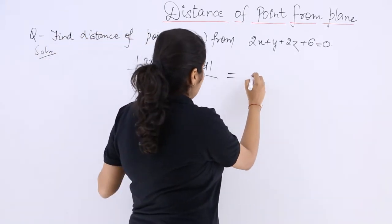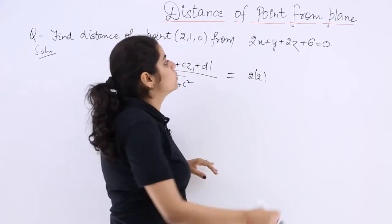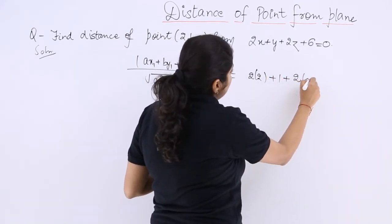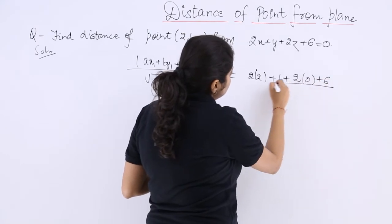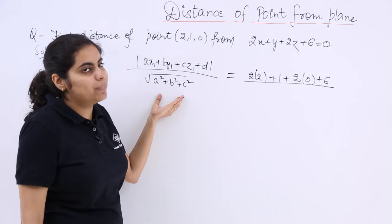So here also we are going to use the same formula: ax1 plus by1 plus cz1 plus d, all divided by the square root of a² + b² + c².